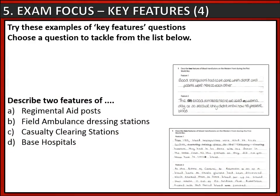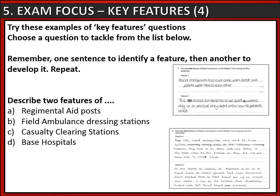Now it's time for you to have a go. On the screen are a list of key features questions. You might want to pause the video and choose a question to try. But before you do, remember that you are being asked to give two features — that means one sentence to identify a feature, then another to develop it with detail. Then you just need to repeat that process to gain four marks. Pause the video now and have a go.